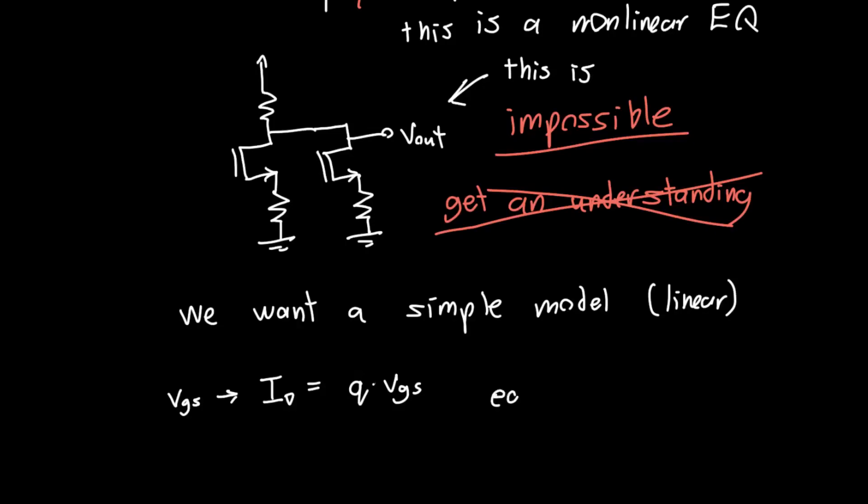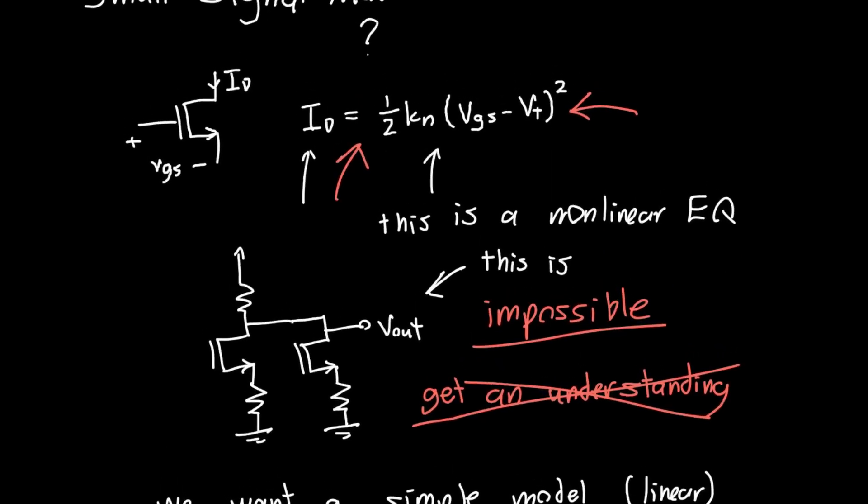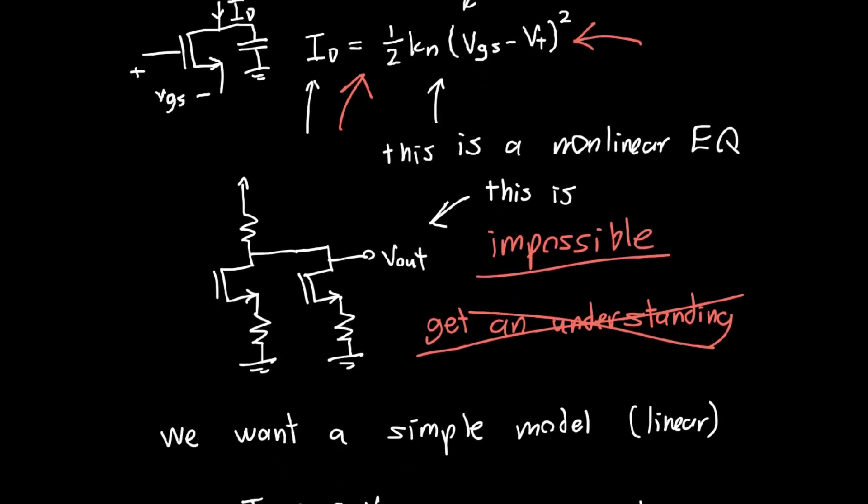This is easy to solve and it has exact solutions. Our nonlinear equation up here may not have, it doesn't generally have exact solutions. If we're interested in the current, for example, as a function of time, you put in some capacitor somewhere, and that's going to very quickly spiral out of control.